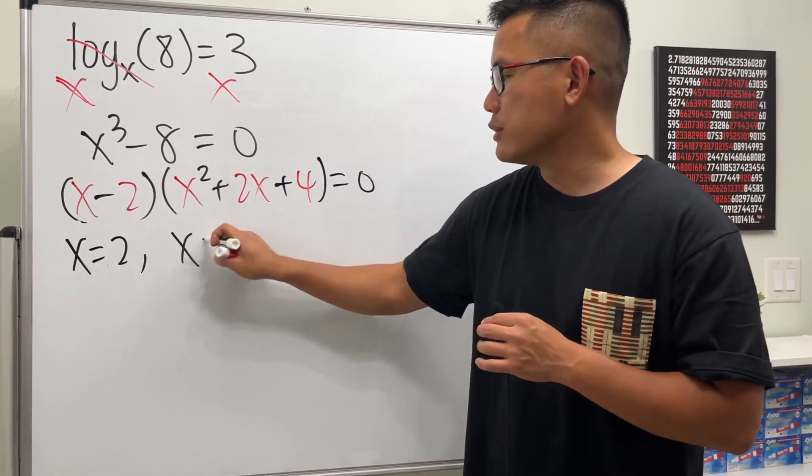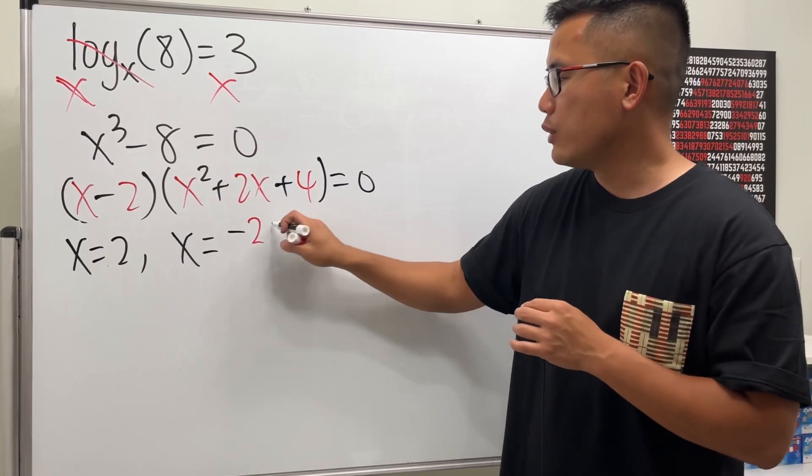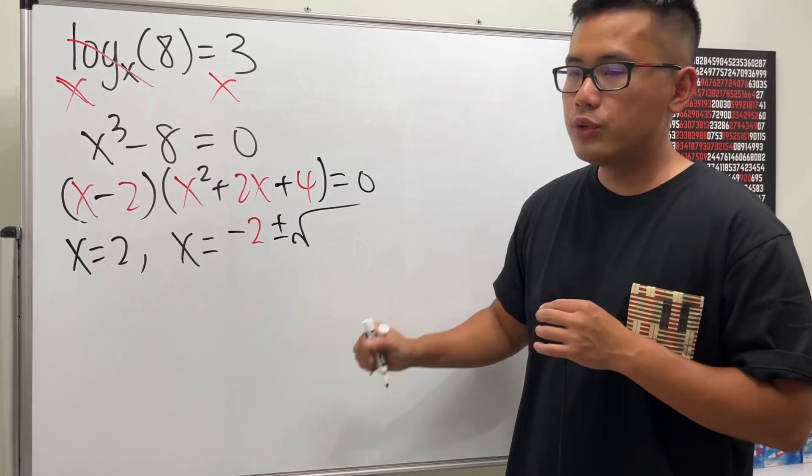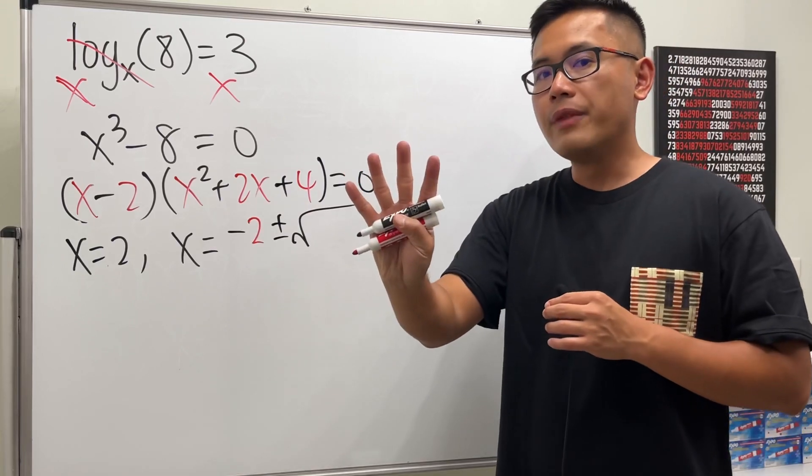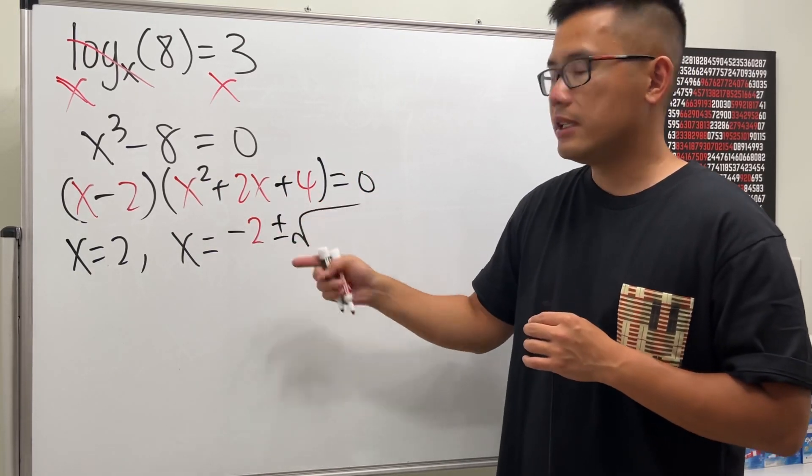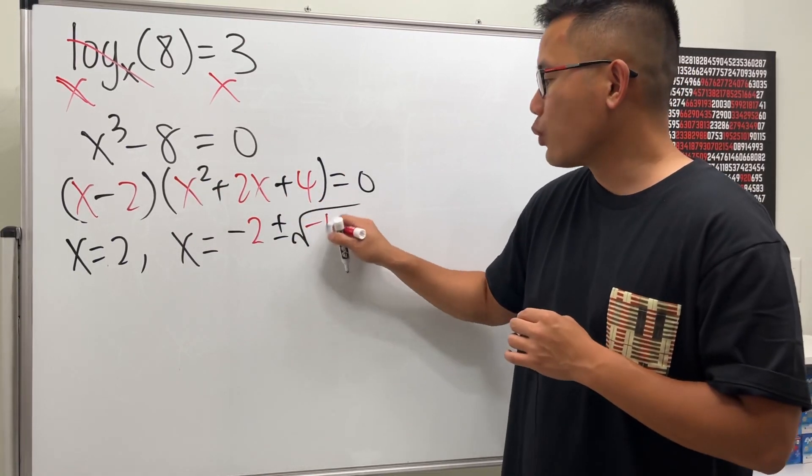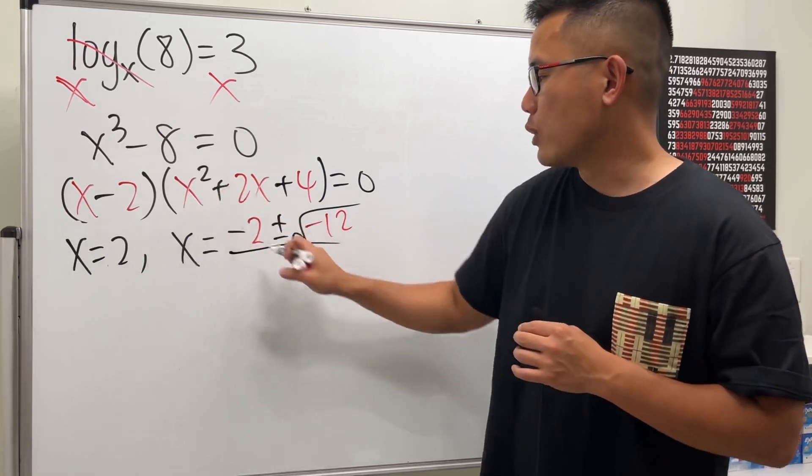And from here, let's just go ahead and use the quadratic formula. We have negative b, which is negative 2, and we add the plus or minus and take the square root. B squared is just going to be 4, and then 4 times this and that, which is 16. So 4 minus 16 is minus 12, and then all over 2 times 1, which is just 2.